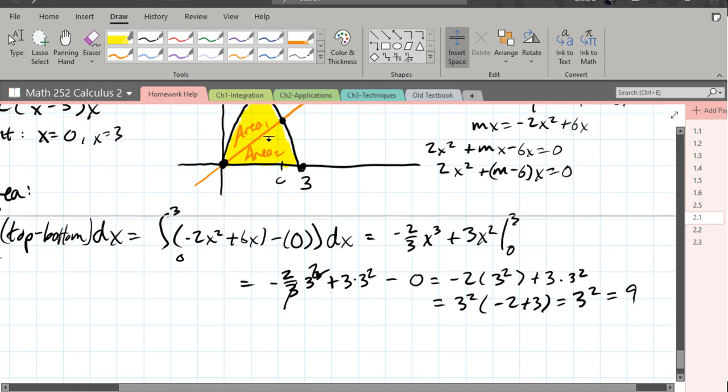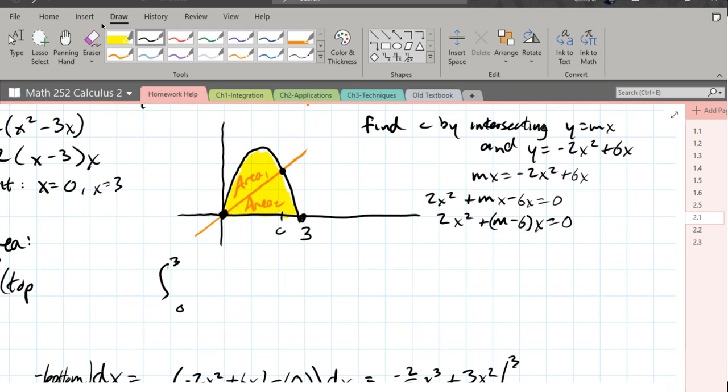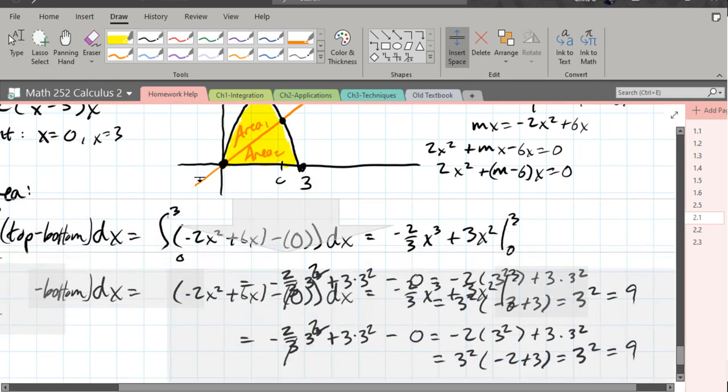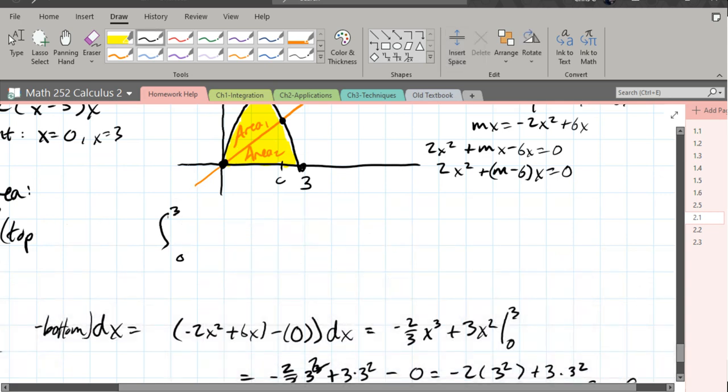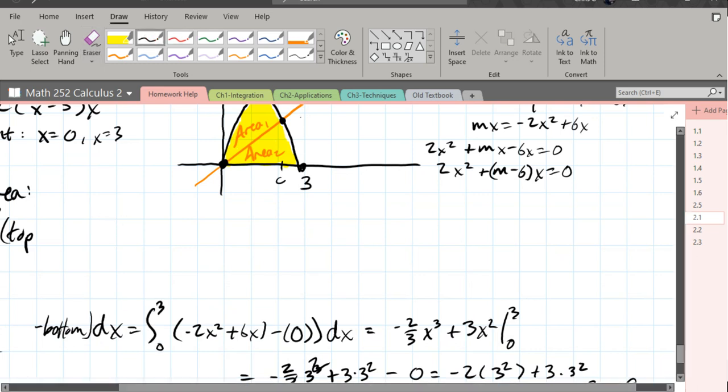So I'm going to do something you can't do on your paper. So factor out the x. So we have x times 2x plus m minus 6. I don't need to wrap an extra parenthesis because I got the thing that we were multiplying by out of there. Equals 0.